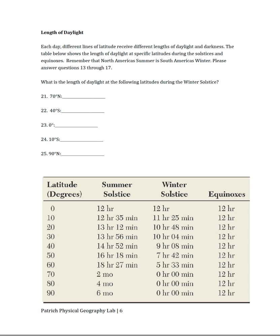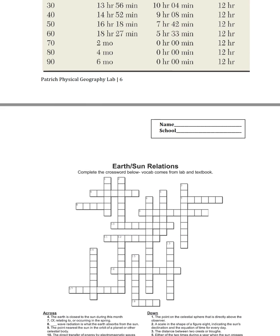Moving down to the last portion of this lab, before we get to the fun part, we'll be looking at length of daylight. Each day, different lines of latitude receive different lengths of daylight and darkness. The table below shows the length of daylight at specific latitudes during the solstices and equinoxes. Remember that North America's summer will be South America's winter. So this activity is walking us through the winter solstice in the northern hemisphere, which means if you're looking at a northern hemisphere value, we're looking at the winter solstice values. If it is a southern latitude, then it must be a summer solstice value. So that's kind of tricky, but make sure you pay attention to that because you might be using that diagram on the final exam.